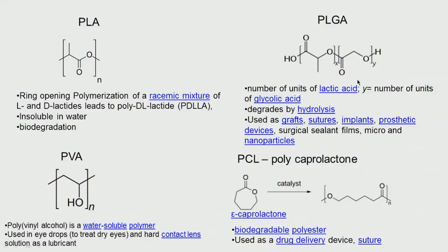Some polymers approved by the FDA include polylactic acid (PLA). PLA is biodegradable but insoluble in water. It is made by ring-opening polymerization of a racemic mixture of L and D lactides to produce poly(D,L-lactic acid). If only L-lactide is taken, we get PLLA (poly-L-lactic acid). Their properties can be tuned by using a D,L racemic mixture or just L-lactide.